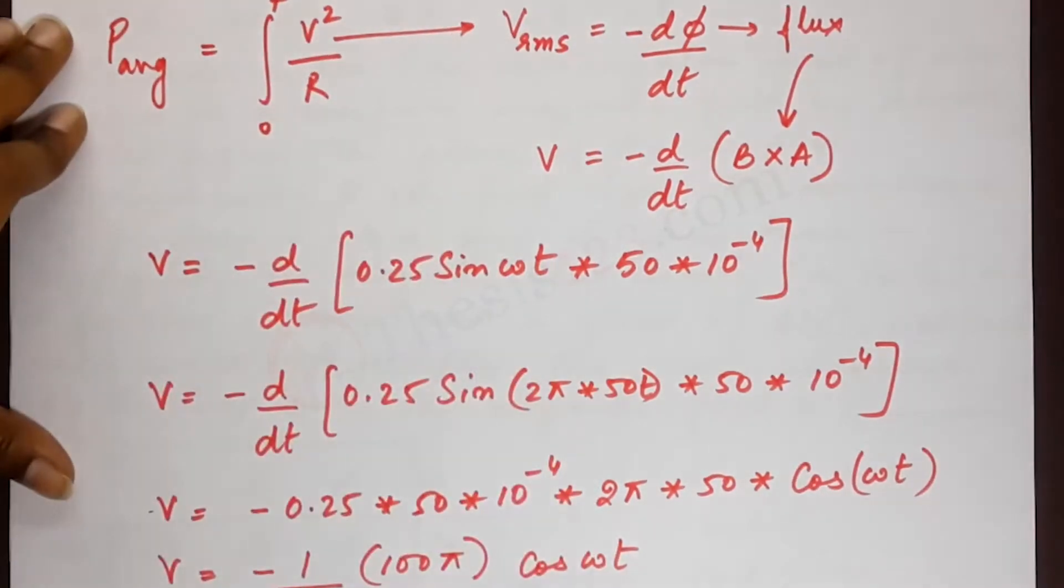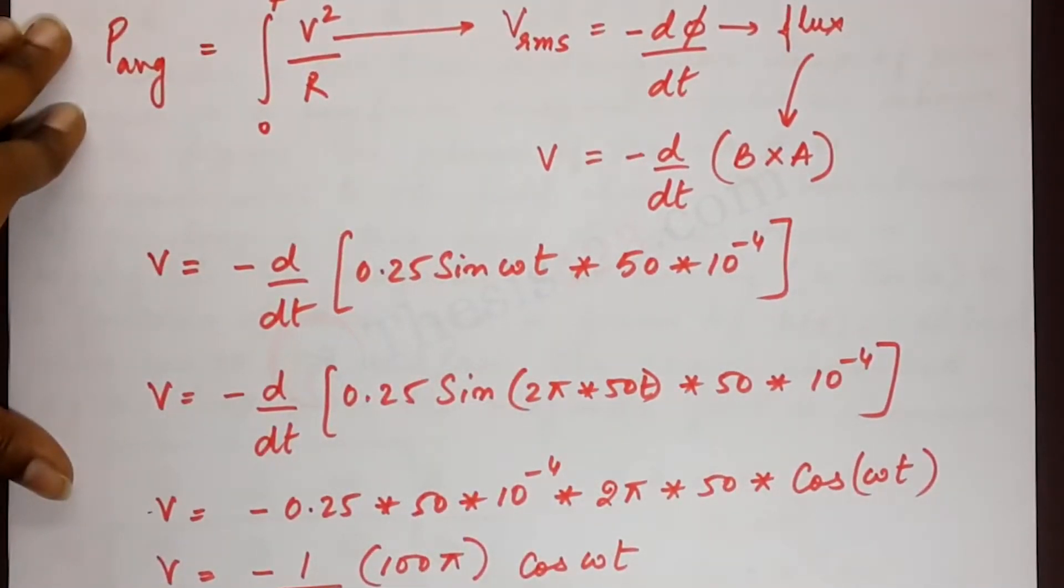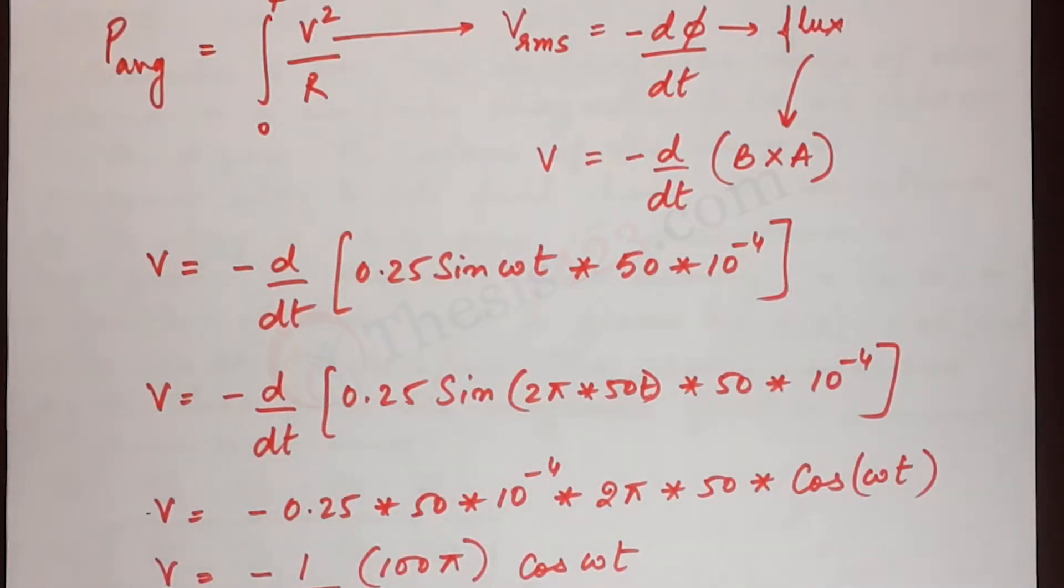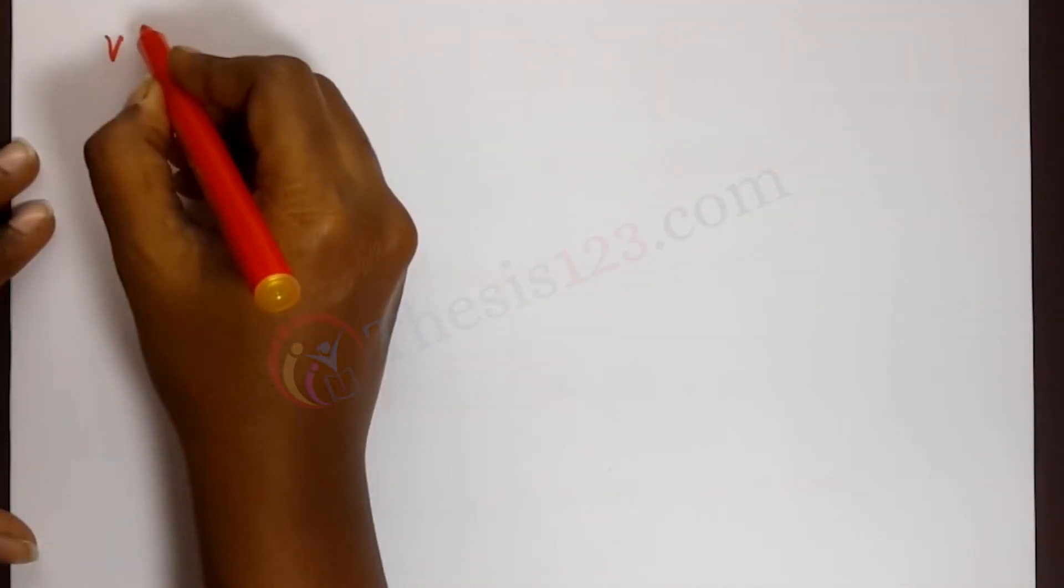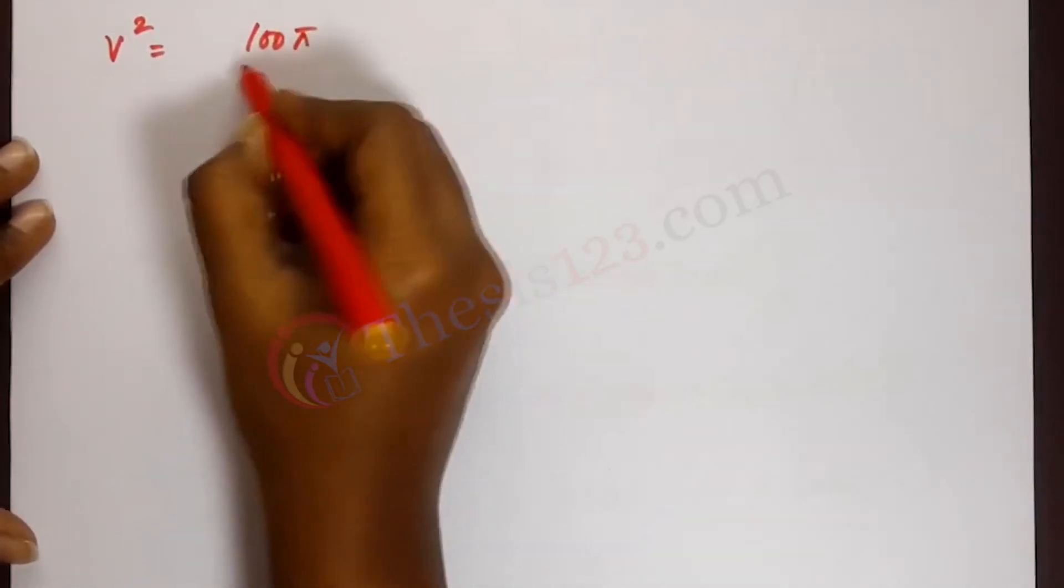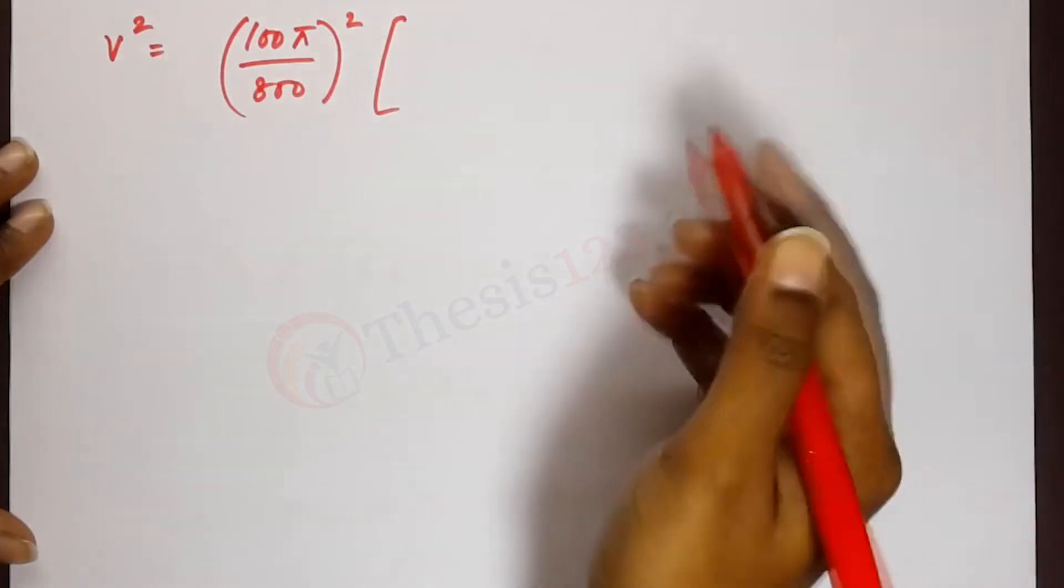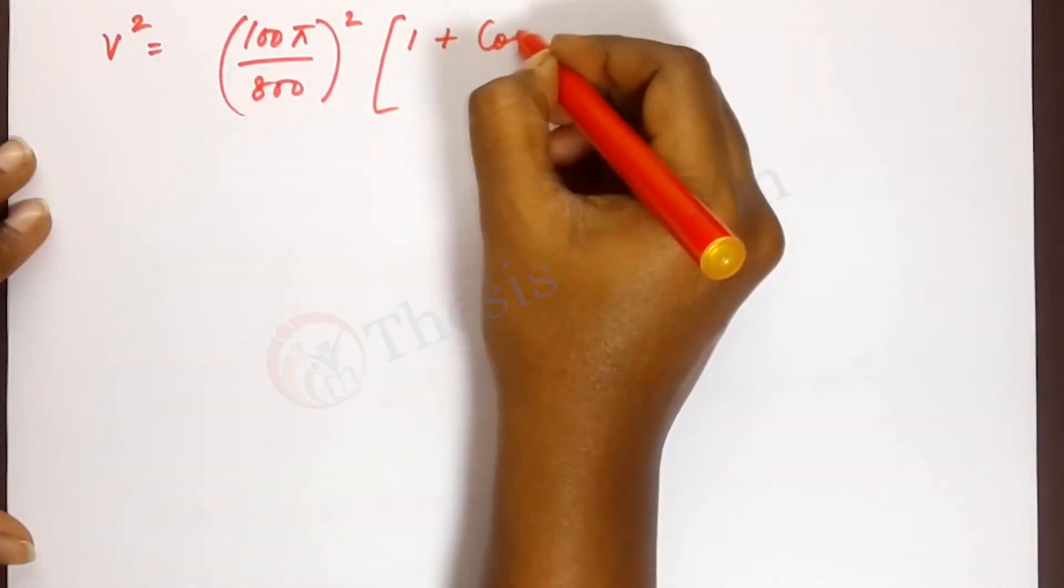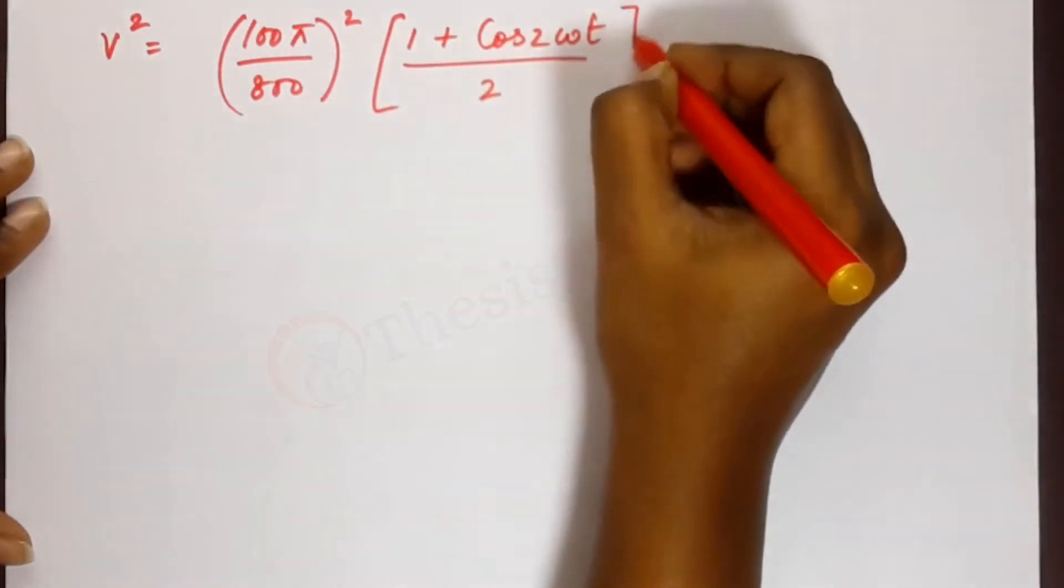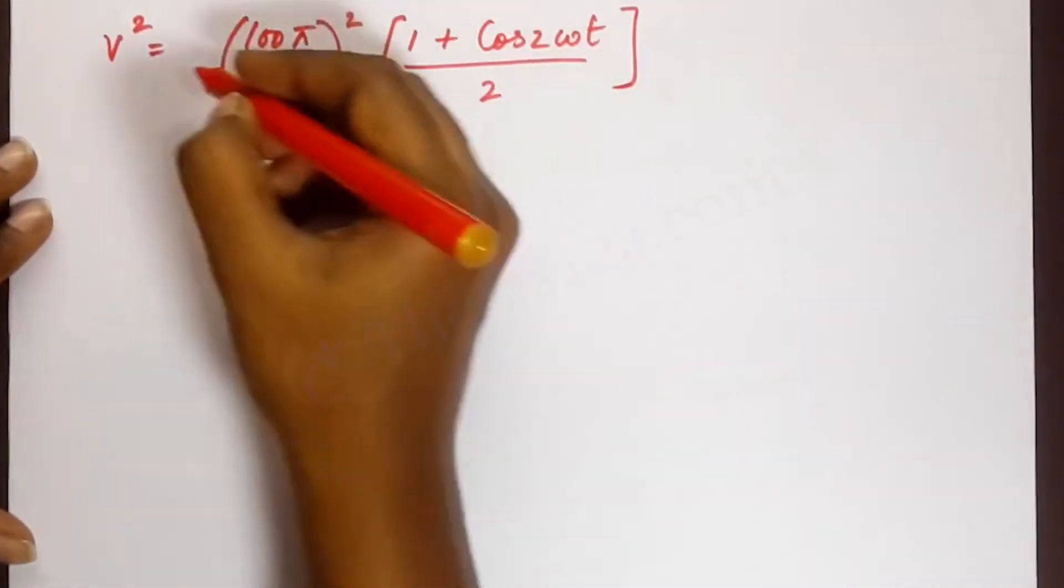Now we need v square. So v square term becomes 100 pi by 800 whole square into cos square omega t. Now cos square omega t must be written in terms of cos. Now we need to remove the square term and recall from our trigonometric relations what cos square theta is. So we can write this as v square equals 100 pi divided by 800 whole square into cos square theta, which can be written as 1 plus cos 2 theta divided by 2. So 1 plus cos 2 omega t divided by 2 is what we have now. This is v square.